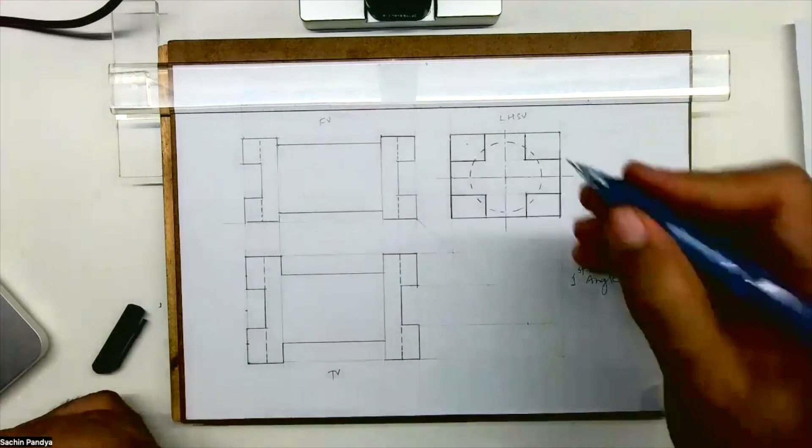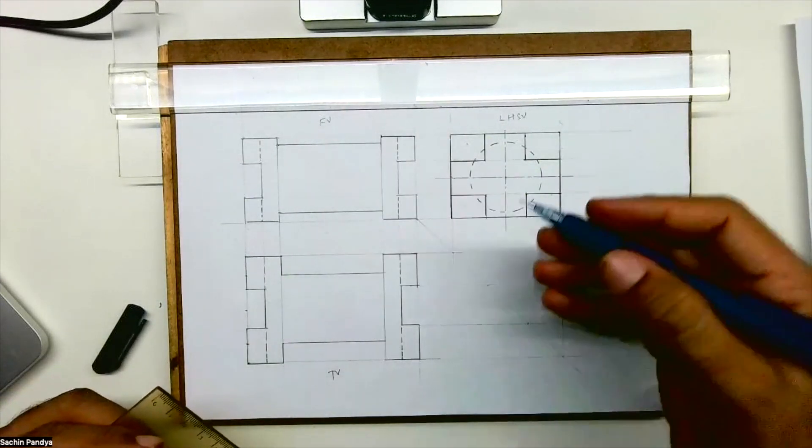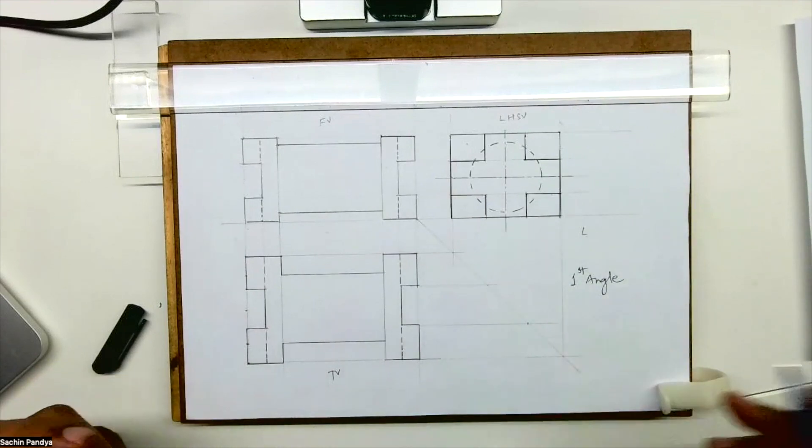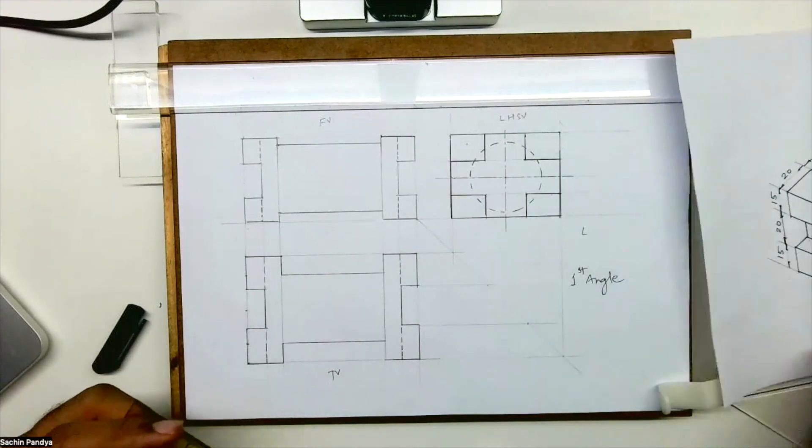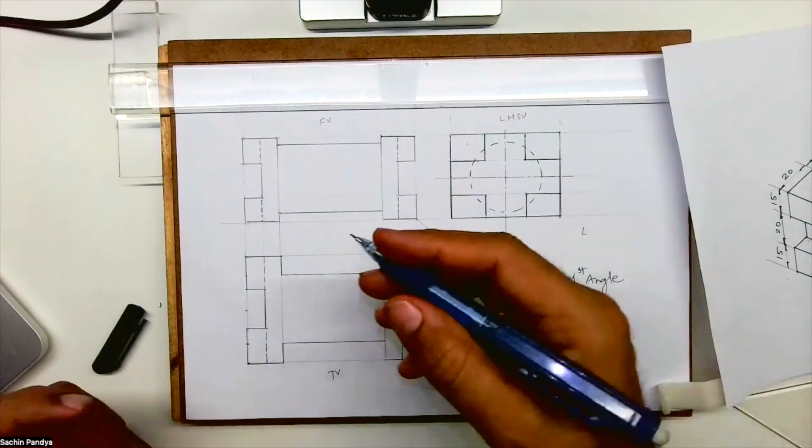This is side view, top view, and side. This is first angle. If I want to draw it in third angle, then I have to draw the same but the placing will be different. I'll do it afterwards.